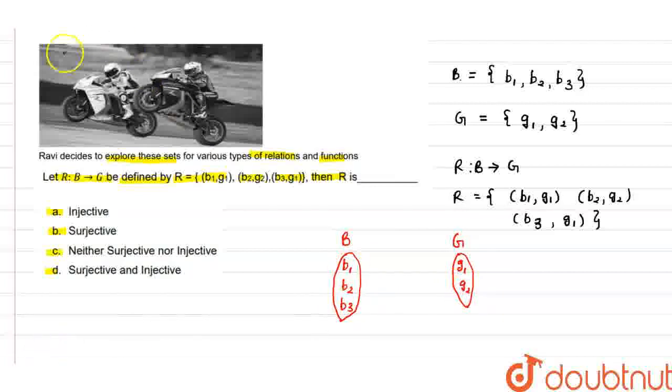We will find whether the relation R is an injective function or surjective function. For an injective function, each element of B should match with a unique element of G. It should not be that two elements of B match with a single element of G. Here, b1 matches with g1, b2 matches with g2, and b3 matches with g1. But in an injective relation, each element of B should match with a unique element of G. Since b1 and b3 both match with g1, the given relation is not an injective function. So option A is wrong.